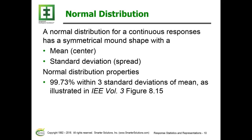For a normal distribution, the property is that 99.73% of values fall within plus or minus three standard deviations of the mean. That is illustrated in Figure 8.15 of Volume 3.